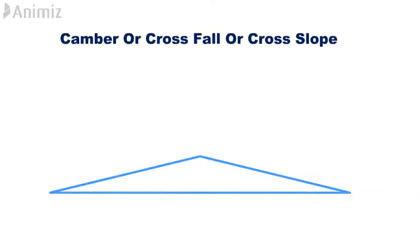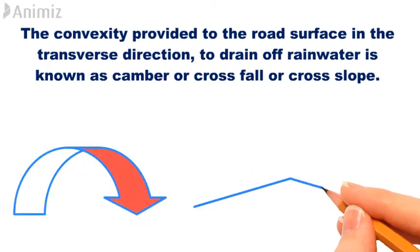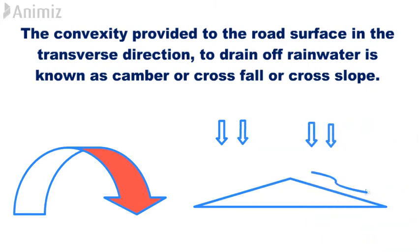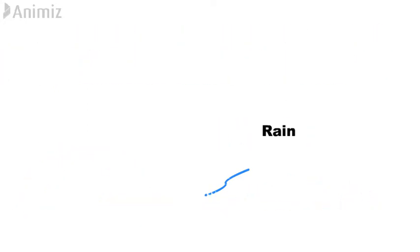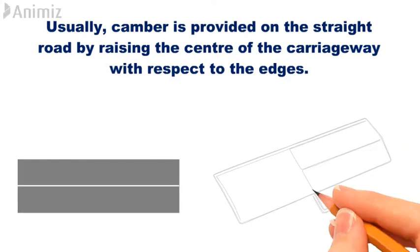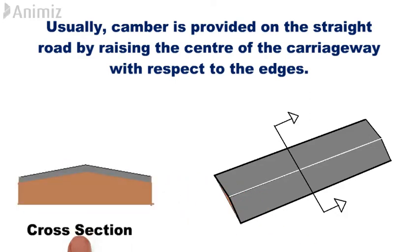What is camber or crossfall or cross slope? The convexity provided to the road surface in the transverse direction to drain off rainwater is known as camber or crossfall or cross slope. Usually, camber is provided on the straight road by raising the center of the carriageway with respect to the edges.